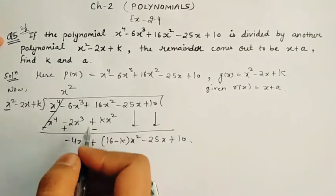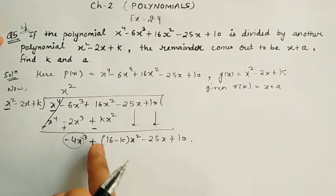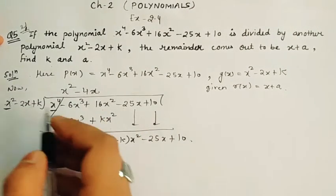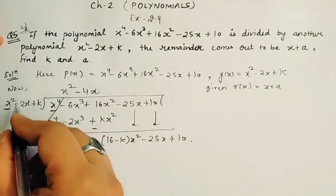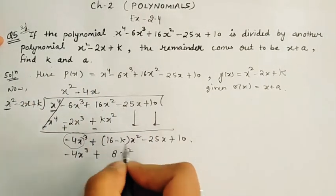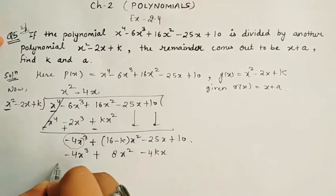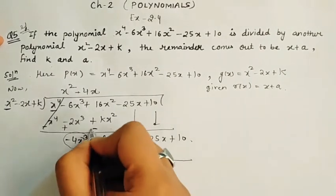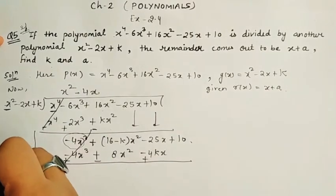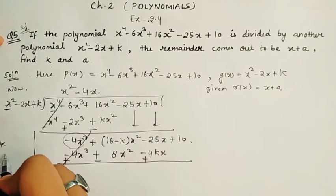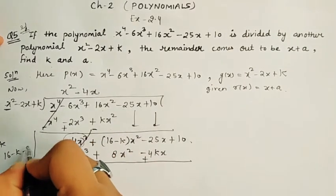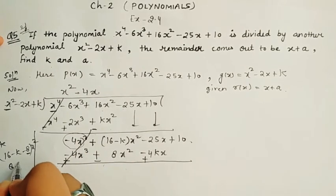Now these terms will be here. In the next step, we have to divide this first term again by the same term. So -4x³ upon x² will be equal to -4x. So -4x into x² gives -4x³, minus minus plus, 4 times 2 is 8x². So x² will not remain. Minus 4kx. Cancelled.